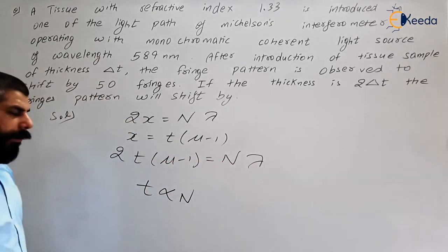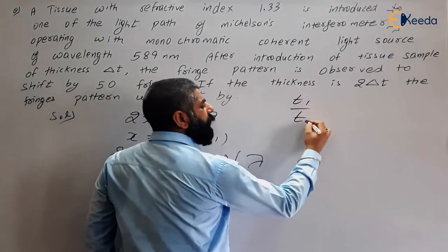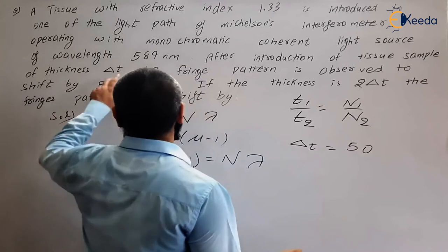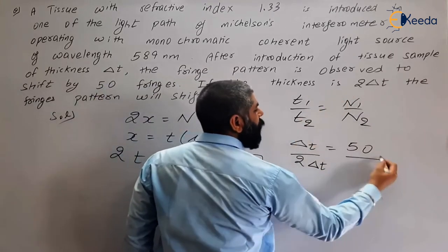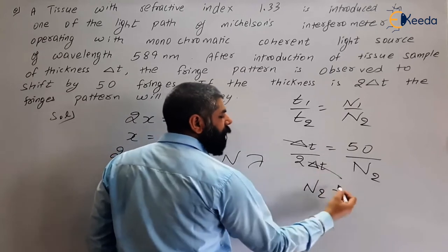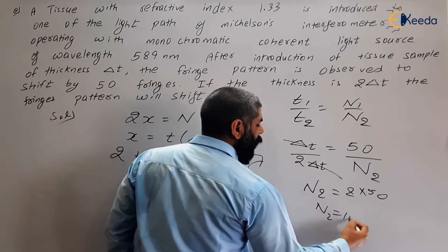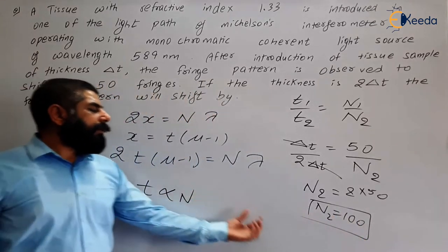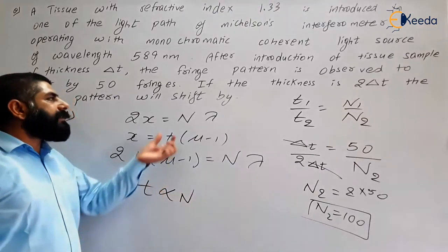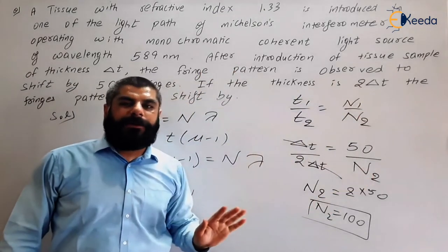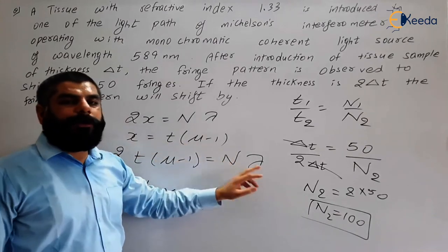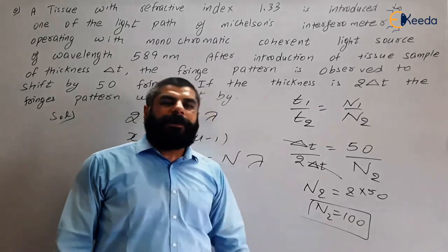We can write t1/t2 = n1/n2. For thickness δt, the number of fringes crossed is 50. For thickness 2δt, we need to find n2. So δt/2δt = 50/n2, giving n2 = 100. Therefore, if the thickness is doubled to 2δt, with refractive index and wavelength remaining constant, the number of fringes crossed is 100. Thank you.